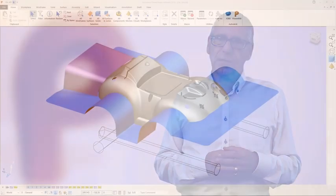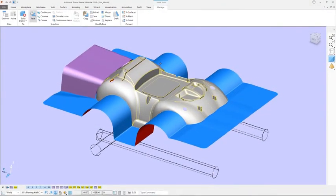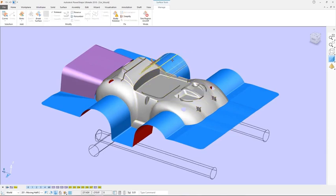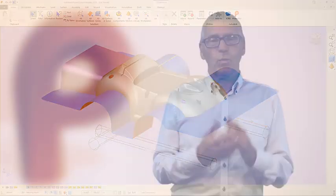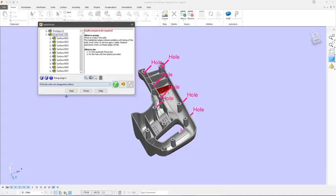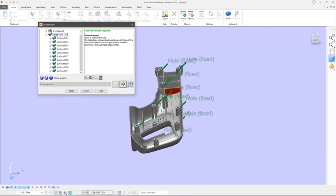PowerShape operates on 3D data regardless of which system created it, and no matter what format: solids, surfaces, wireframe, even meshes. Once imported, intelligent analysis tools automatically detect and repair critical faults that could complicate downstream processes.